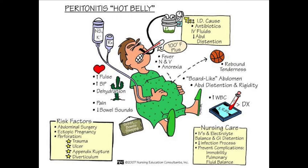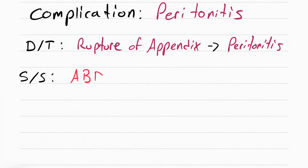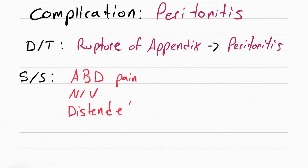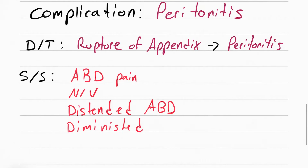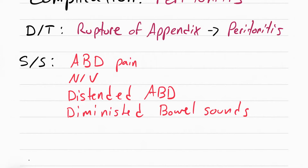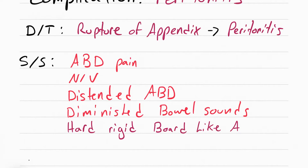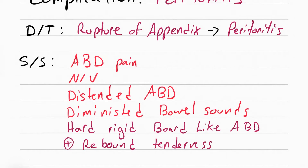The nurse's job is to be able to identify the signs and symptoms of peritonitis. Peritonitis causes severe abdominal pain, nausea, vomiting, distended abdomen, and diminished bowel sounds — so when you put your stethoscope, you won't hear it as well. Other symptoms include a hard, rigid, board-like abdomen, meaning their abdomen is very hard.